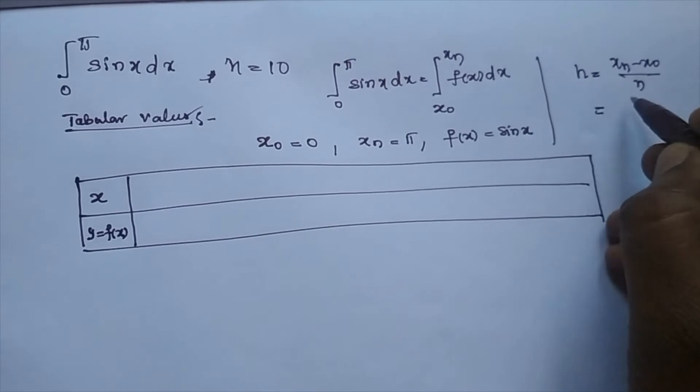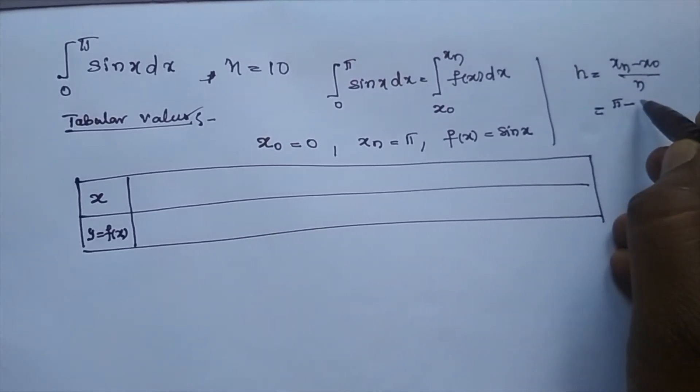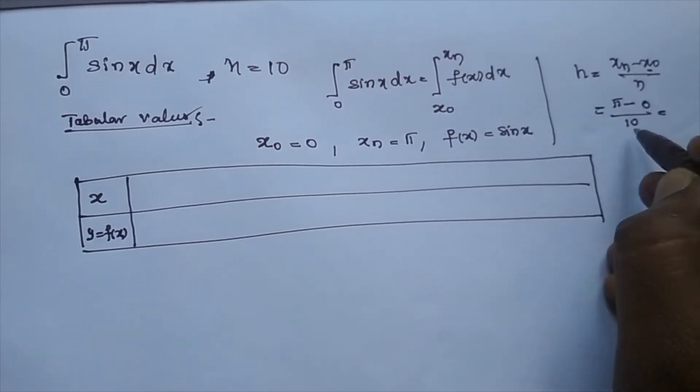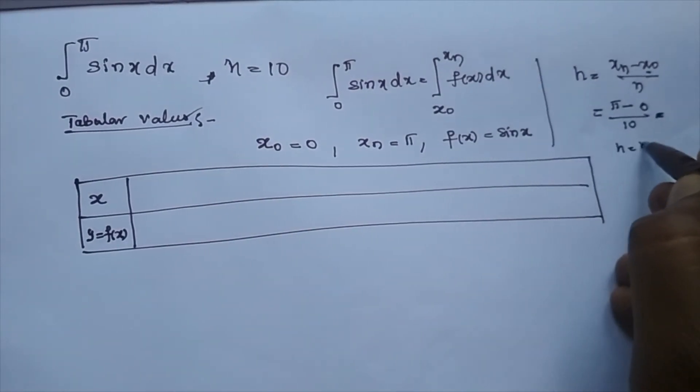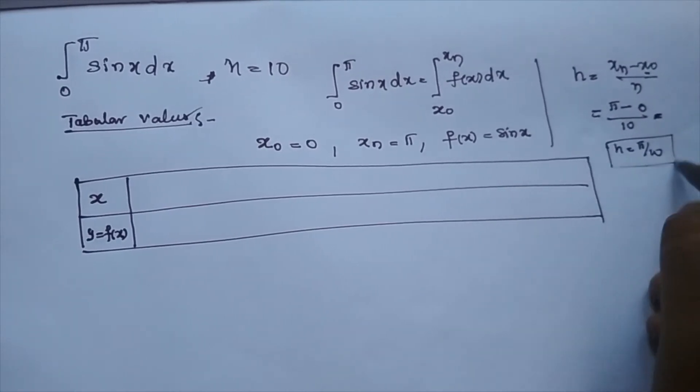So we are getting h value: xn is pi minus x0 by n value 10. So h is equal to pi by 10. This is the interval length.